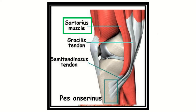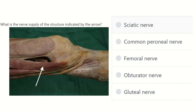Hello everyone, welcome to another question and answer session. The question is: what is the nerve supply of the structure indicated by the arrow? First of all, we have to identify this muscle.